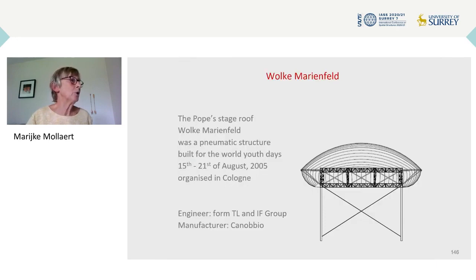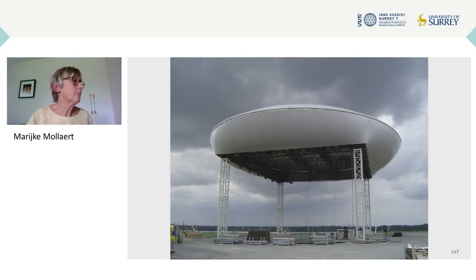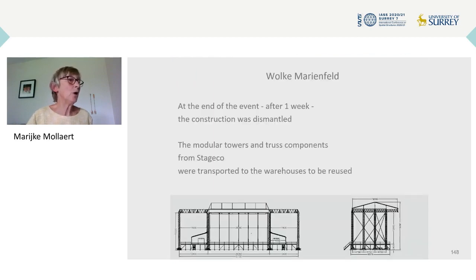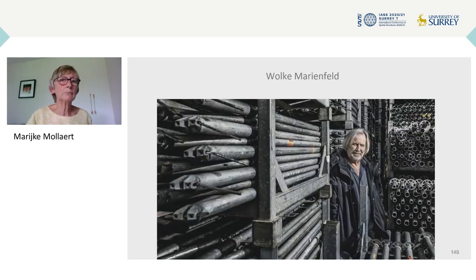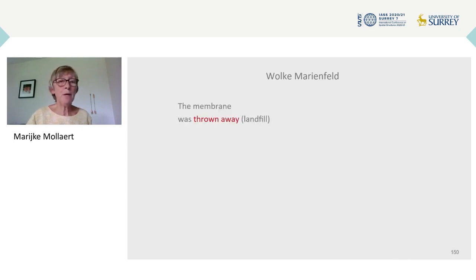The Pope's stage roof, Volker Marienfeld, was a pneumatic structure built in 2005. The cloud contains an elliptic ring with a double cushion and four lateral cushions. Four towers support the grid of the roof, built by main and secondary trusses. At the end of the event, after one week, the construction was dismantled. The modular towers and truss components from Stageco were transported to warehouses to be reused. It is the philosophy of Stageco — supplying stages for international tours — to build, dismantle and reuse structural elements. On the other side, the membrane was thrown away, probably brought to landfill.